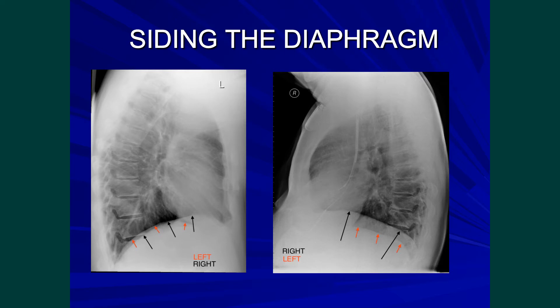The left hemidiaphragm on the other hand goes from back to front but becomes invisible as the heart, which lies just above it, sits on the diaphragm. On the left diagram you can see that the right hemidiaphragm is clearly seen from back to front and goes across the cardiac silhouette.